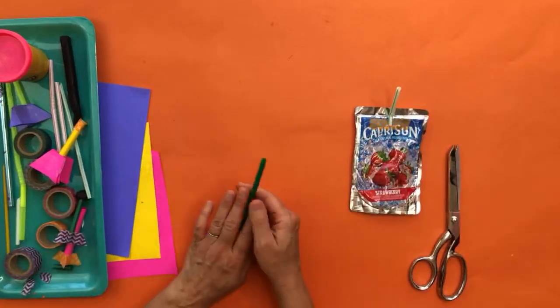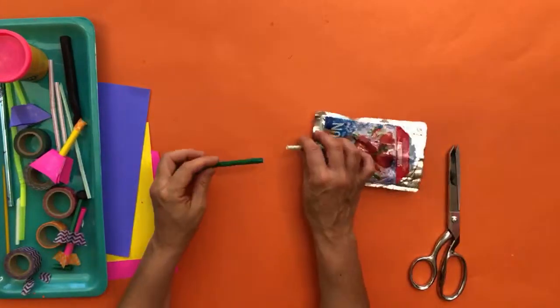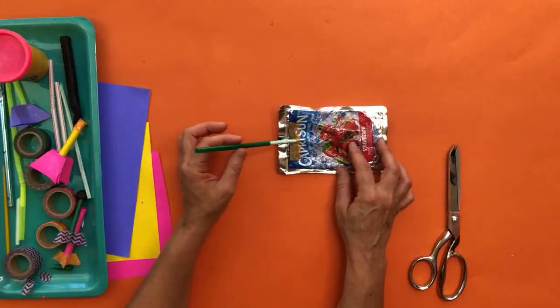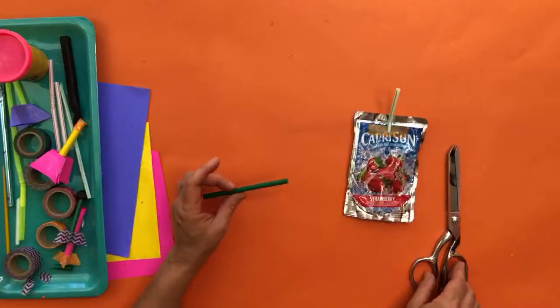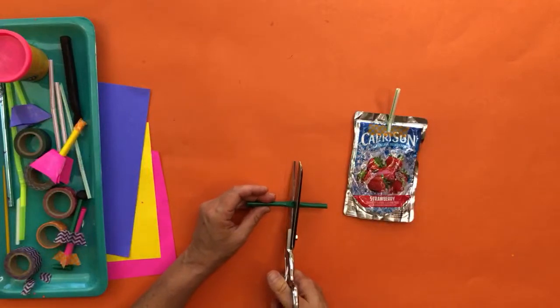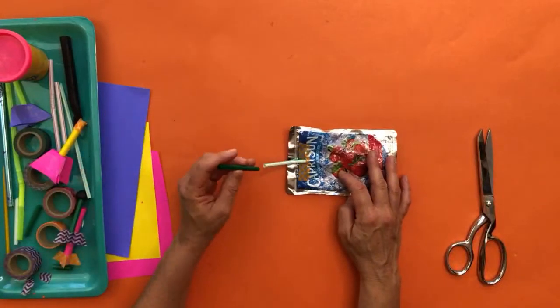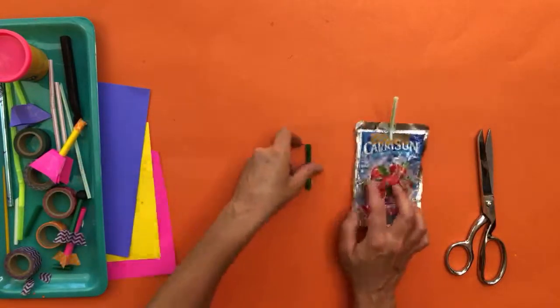Now we're going to make our rocket. So if you have, like I said, a straw that already fits loosely on top of the other straw, you're golden. All you need to do is trim it to about, let's say about two inches. And set it aside.